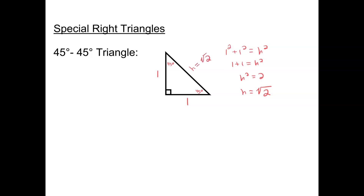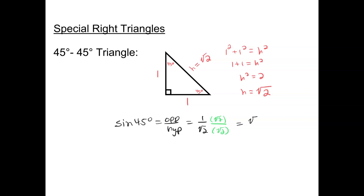Now let's see what that does to our trig functions. I'm going to find the sine of 45 degrees. We know that that's opposite over hypotenuse. When I look at my triangle for 45 degrees, opposite is 1 and hypotenuse is radical 2. So I have 1 over radical 2. I have to rationalize that, so I multiply by radical 2 over radical 2, and that gives me radical 2 over 2 for the sine of 45 degrees.